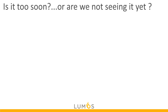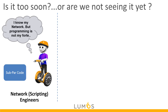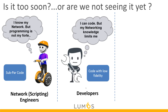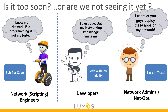Is it too soon? Are we not seeing it yet? We have our network engineers that know their network, but programming is not really their forte. If they know any scripting, it's really probably subpar code. We have developers — they know code inside and out, it's their bread and butter. But their networking knowledge is limited, maybe nonexistent. So when it comes to network code, the fidelity or the quality level is quite low. And then we have our network admins, or NetOps guys, who are basically saying, I can't let you guys deploy these apps on my network. And essentially, it boils down to a lack of trust.